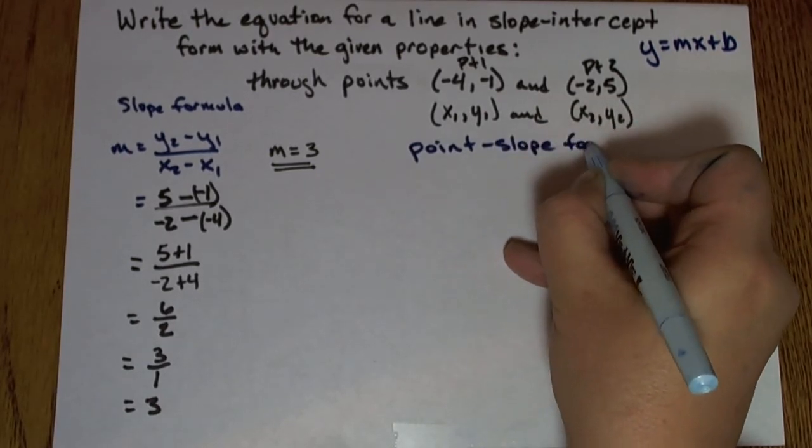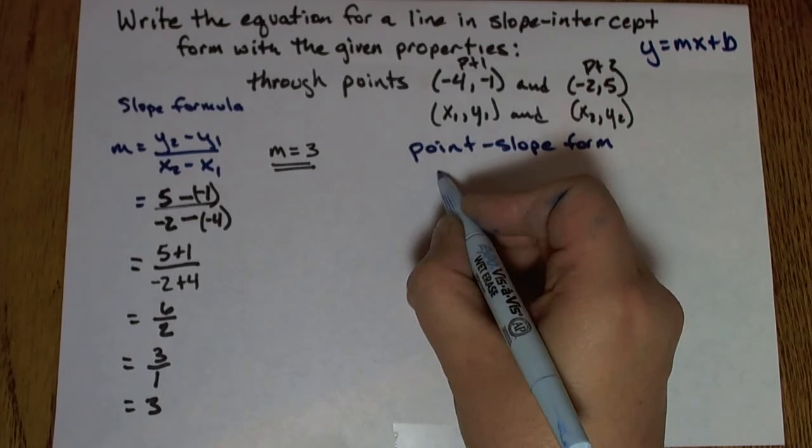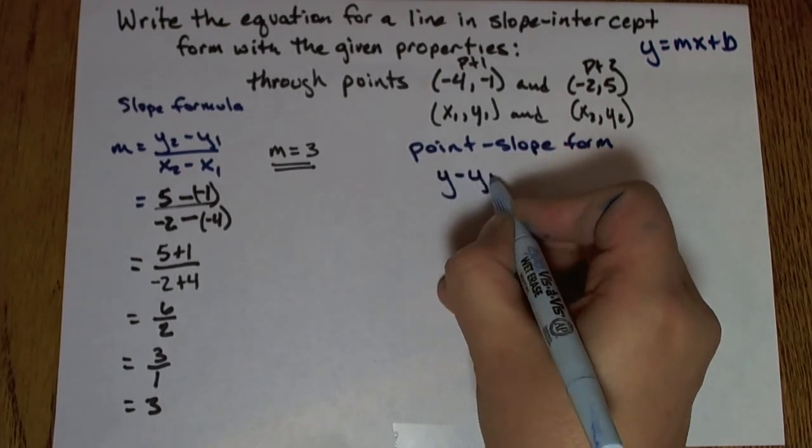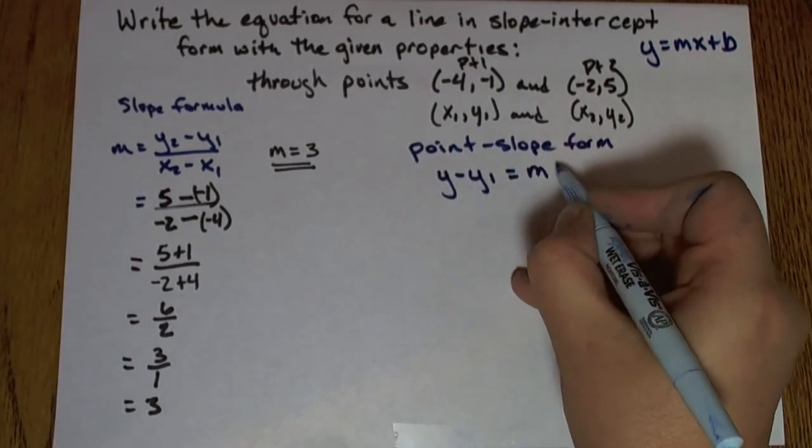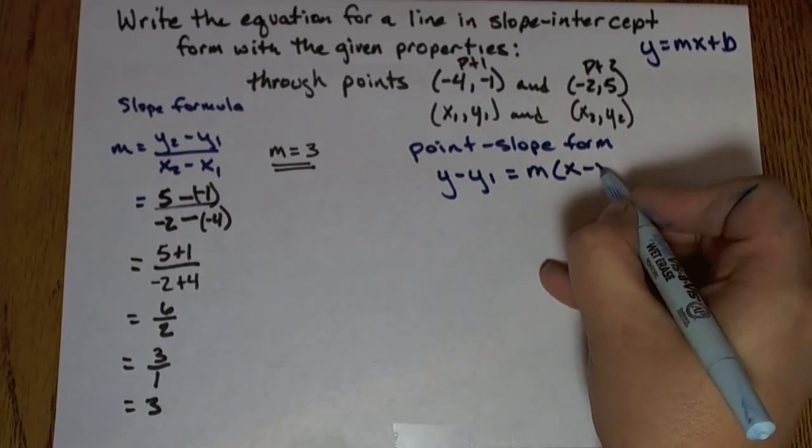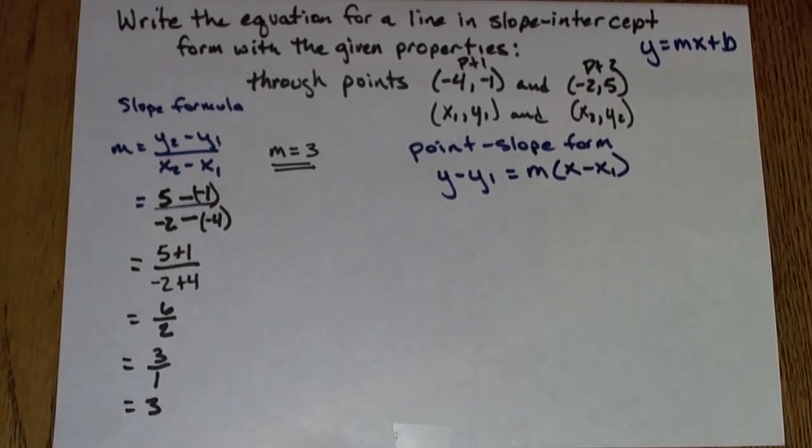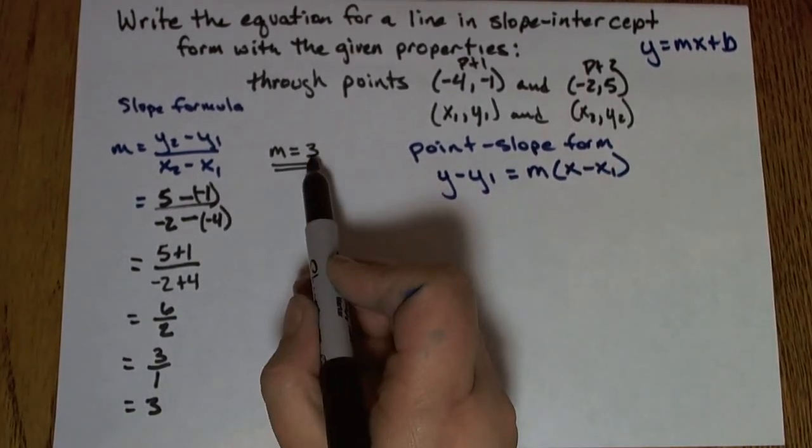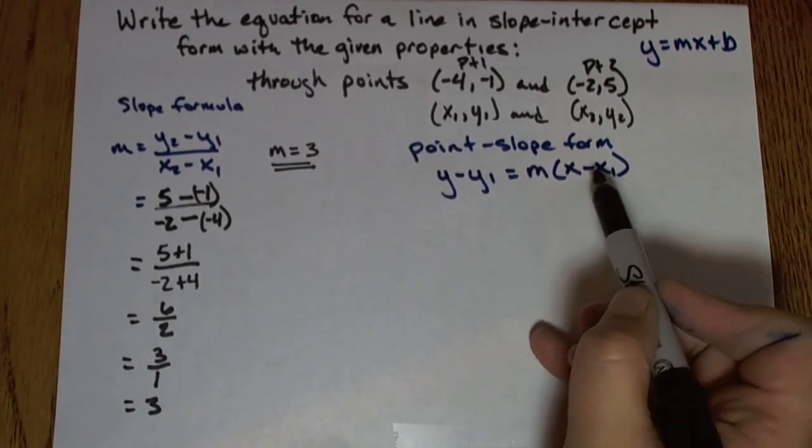Point-slope form says I can take y minus y1, and that's going to equal the slope m times x minus x1. So in the point-slope form, I need the slope and one point that I can call x1, y1.